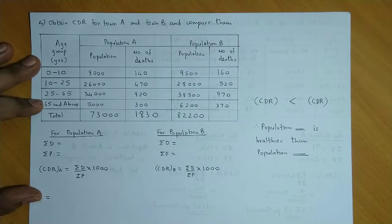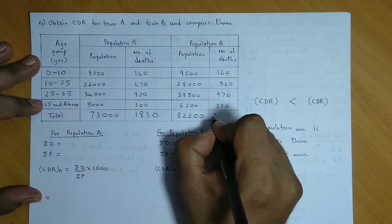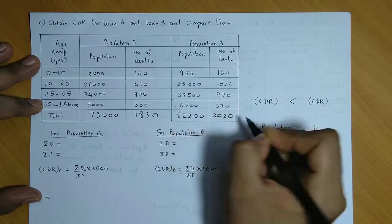Let us add the number of deaths. So 160 plus 520 plus 970 plus 370. Now we have total number of deaths, so total number of deaths here is 2,020.